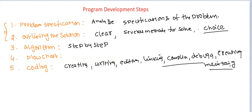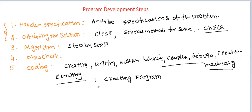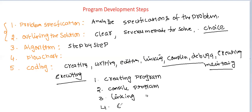Our main aim is executing the program. Executing the program mainly involves four steps: first, write the program; second, compile the program; third, linking the program; and fourth, executing the program. These are the four steps required for completion of a program.